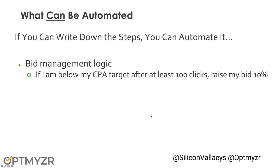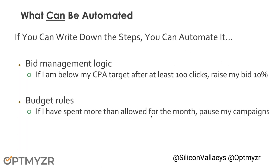Let me give some examples. For bid management logic, a very simple rule: if I'm below my CPA target and I have at least 100 clicks, then raise my bid, because I can afford to spend more, and by bidding higher I might get more volume and more conversions while staying within my cost per acquisition target. For budget rules: if I've spent more than my allowed budget for the month, I want to pause all of my campaigns. These are highly structured — you can write down exactly what needs to be done. You can either give it to a human or use tools like AdWords scripts to fully automate this without humans in the process.